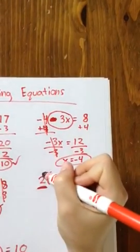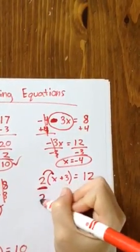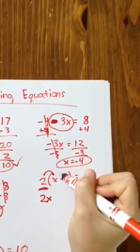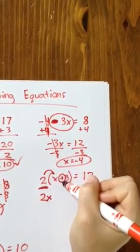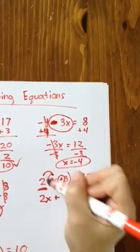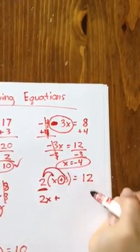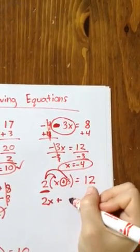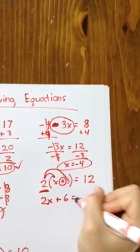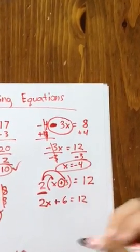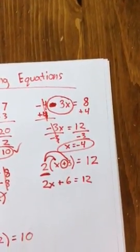So what I'm going to do is I'm going to do 2 times x, which is 2x. And then I'm going to bring whatever sign is in the middle right down. And then I'm going to do 2 times the other term, which is 3. And 2 times 3 is 6 equals 12. Well, this equation looks like something I know how to solve.